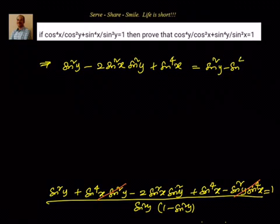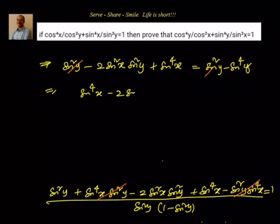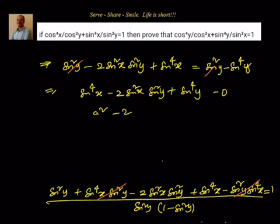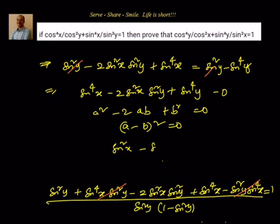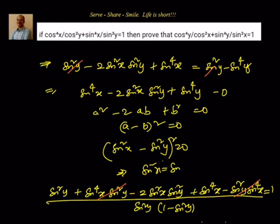Now you can see sin²y and sin²y cancel. Getting everything to the left-hand side: sin⁴x − 2sin²x·sin²y + sin⁴y = 0. This is like a² − 2ab + b² = 0, which is (a − b)² = 0. So (sin²x − sin²y)² = 0, which means sin²x = sin²y.